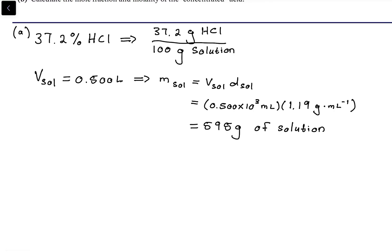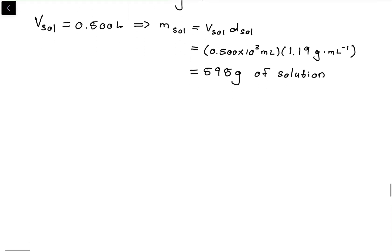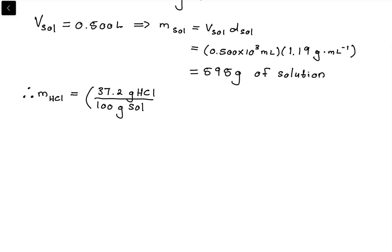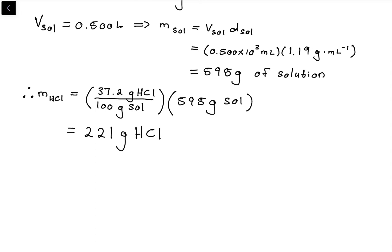We know there are 37.2 grams of HCl per 100 grams of solution, so if we have 595 grams of solution, we multiply those two together to get the mass of HCl. Therefore, the mass of HCl equals 37.2 grams HCl per 100 grams solution, times 595 grams of solution, giving a value of 221 grams HCl.